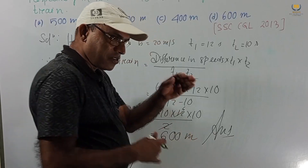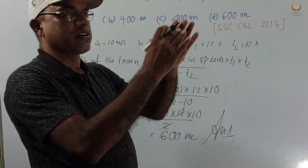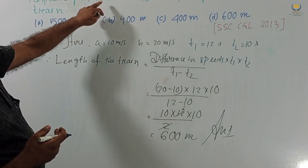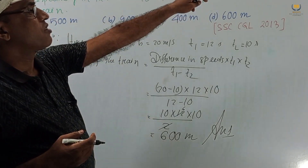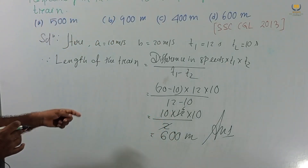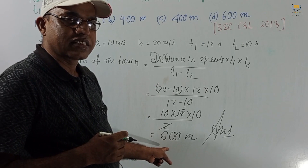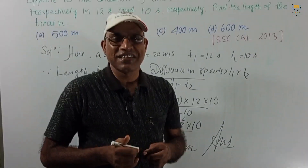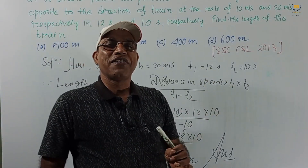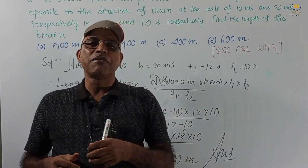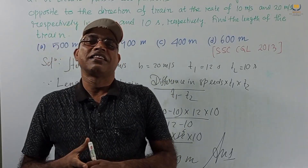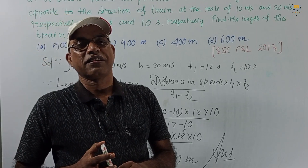Very interesting problem: two men walking and the train also moving in the opposite direction. The train overtakes the two men at 12 seconds and 10 seconds, with speeds 10 m/s and 20 m/s, and we get the length of the train as 600 meters — very easy, simple, but very interesting. I hope you are all enjoying this type of problem. If so, please like this video. If you are new to my channel, please subscribe and click the bell icon. Thank you.